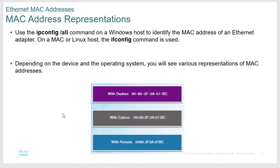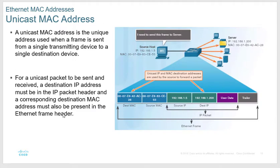A unicast address is one-to-one: when I send a unicast I'm sending something from me to, say, a server. I have my specific MAC address and the MAC address of the server I'm sending to, plus my IP address and the destination IP. There's always a source and destination MAC address, source and destination IP address, and source and destination port number — because any time you're trying to get somewhere you need a starting point and an ending point.